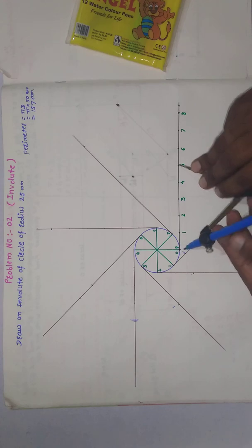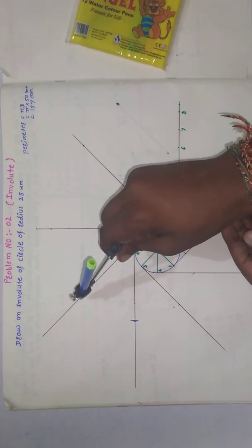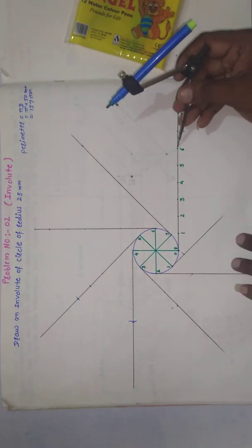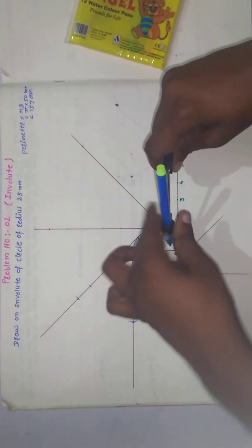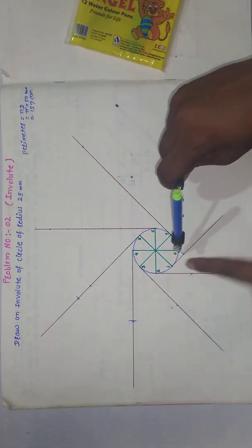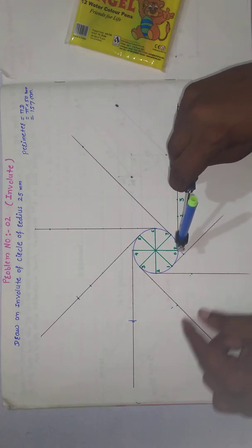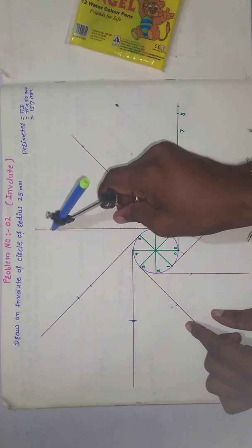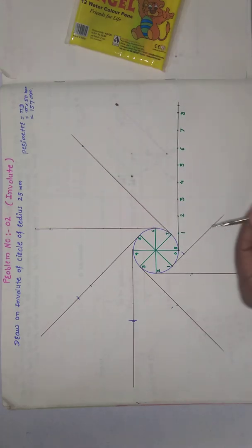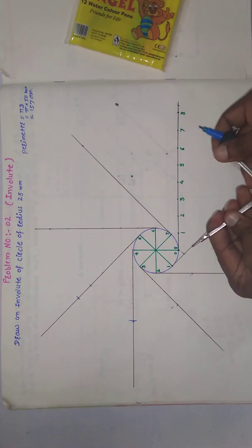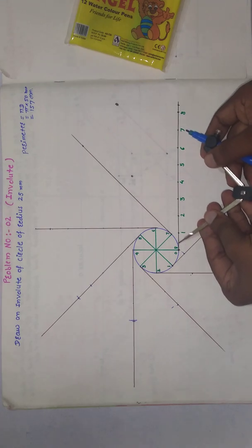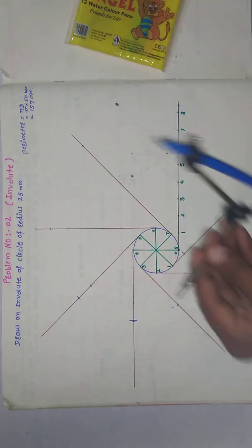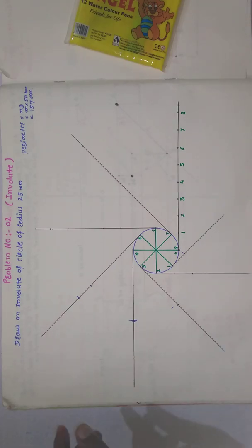Take the distance from zero to five in the compass and from point five cut this distance to get that arc point. Then from zero to six, take that distance and cut it from point six. Finally, from zero to seven, cut that distance from point seven on the tangent line.